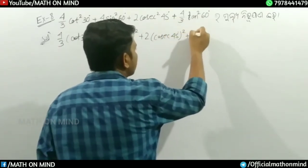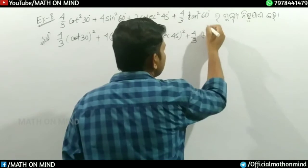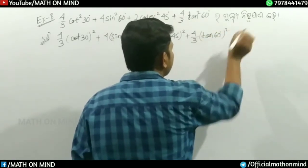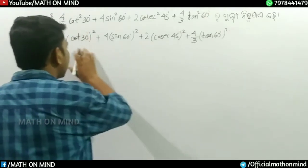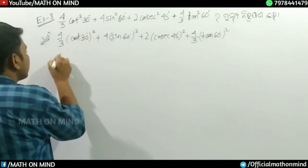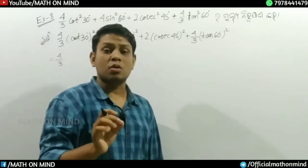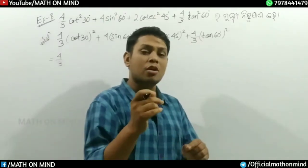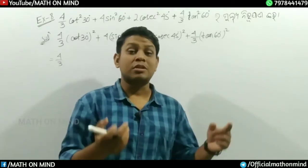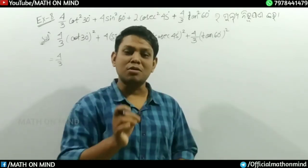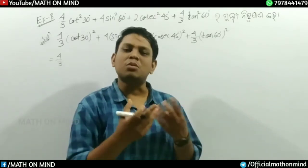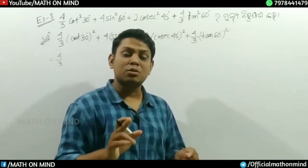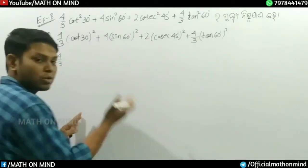By three tan 60 degree, the whole square. Now we'll put the values: tan 60 is √3, so we have 4/3 into (√3)². Looking at this, we'll simplify it. The value is 1/√3, so we'll work through this calculation step by step.